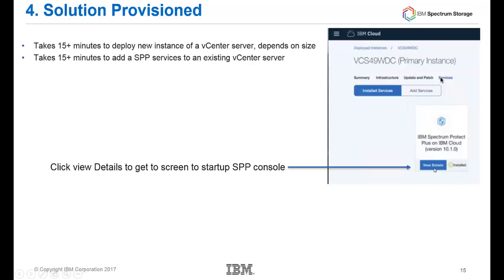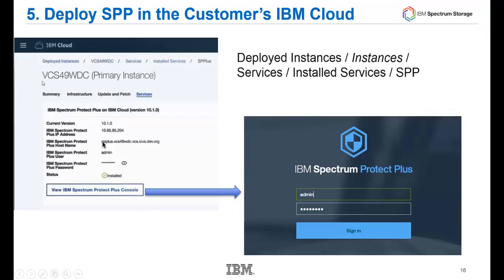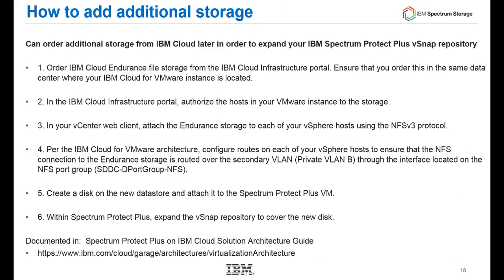If you click View Details on this tile, it will display information about your Spectrum Protect Plus — including the current version, IP address, host name, administrator, and password. If you click View IBM Spectrum Protect Plus Console, that will open the IBM Spectrum Protect Plus console where you can log on. It may become necessary over time to add additional space to your vSnap repository, and the method for doing that is outlined in the architectural guide.